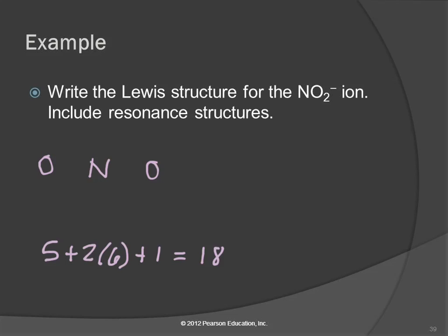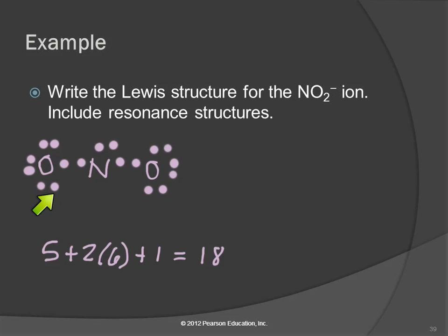I'll stay with the dot notation. Distributing the electrons: 2, 4, 6, 8, 10, 12, 14, 16, 18. We're short — nitrogen does not have an octet. So we need to share more. One of these oxygens needs to share a pair of electrons with the nitrogen in order for everybody to be happy.